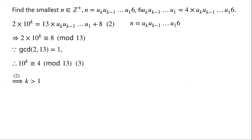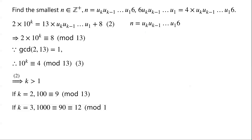From equation 2, k must be greater than 1, because when k=1, the smallest value of the right-hand side is 13×1 + 8 = 21, but the left-hand side is 2×10 = 20, so this is impossible. If k=2, then 10^2 = 100 ≡ 9 (mod 13), so k cannot equal 2. If k=3, then 10^3 = 1000 = 100×10 ≡ 9×10 = 90 ≡ 12 (mod 13), so k cannot equal 3.